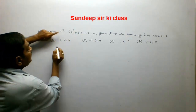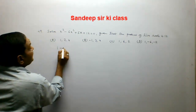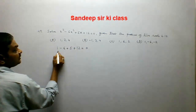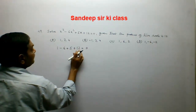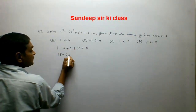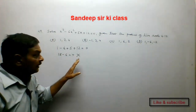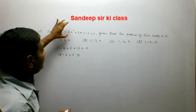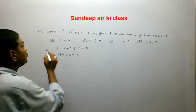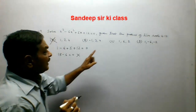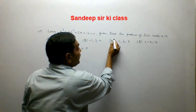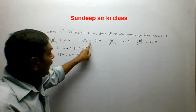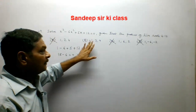Putting x = 1: 1 minus 6 plus 5 plus 12 equals 12, which is not equal to 0. So 1 is not a root, and option A is rejected. Since options with 1 as a root are similarly rejected, option B is chosen as the likely correct answer.